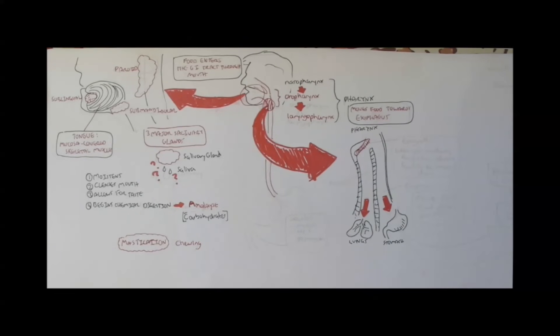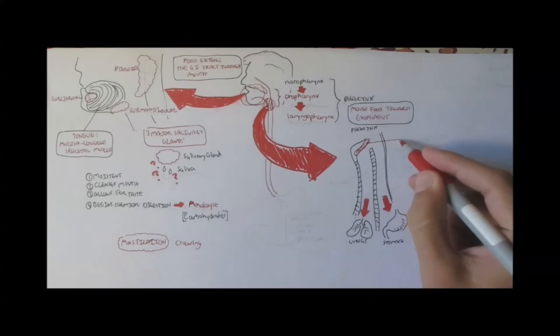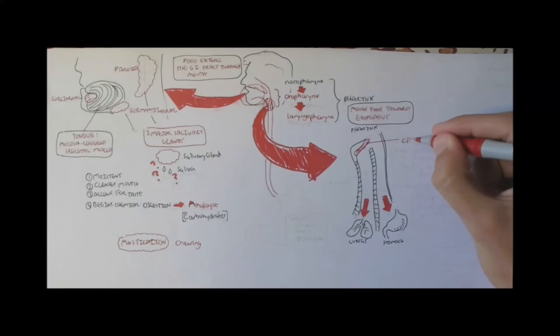Now the passage to the lungs is anterior, in front of the one to the esophagus, which leads to the stomach. And there is a valve covering the passage to the lungs called the epiglottis. Epi means above. So when we breathe, this valve opens to allow oxygen and carbon dioxide to pass through. However, when we eat, we must close the valve to prevent food from getting into the lungs.